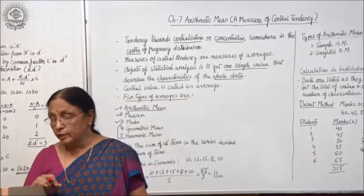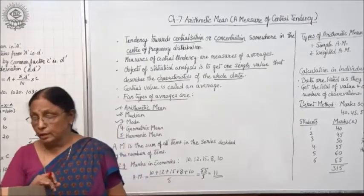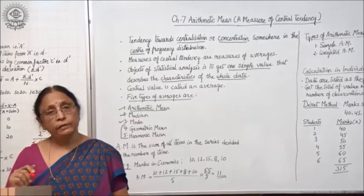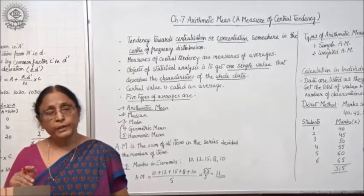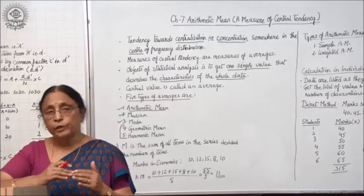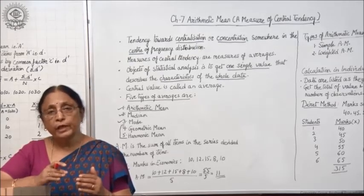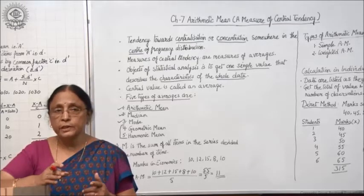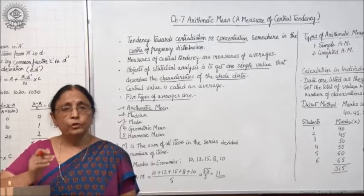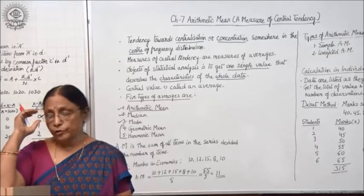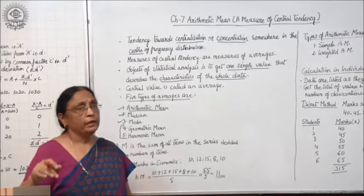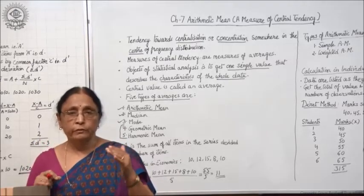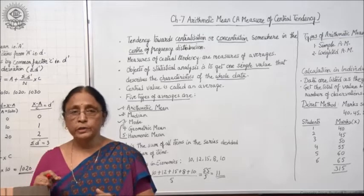Data can be arranged in two ways: grouped data and ungrouped data. In ungrouped data we have individual series, meaning individual items are given with no frequency. In grouped data we have classes and frequency, and this includes discrete series and continuous series. We will be taking the calculation of arithmetic mean in all three types of series: individual, discrete and continuous series.